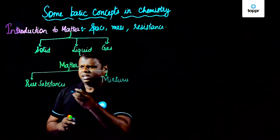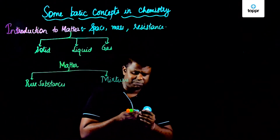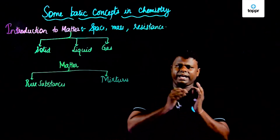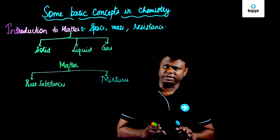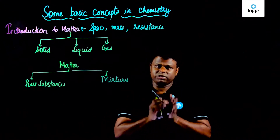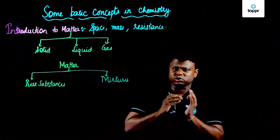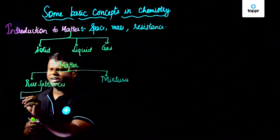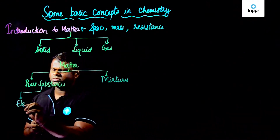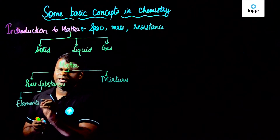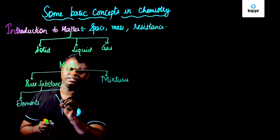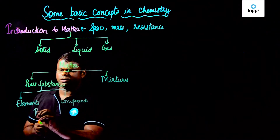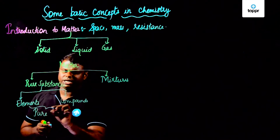So what exactly do you mean by pure substance? When you say something is very pure, that means it does not contain any external substance or impurity. A pure substance contains only one type of substance. Pure substances are classified into elements, and combinations of elements that give you compounds — and they are completely pure.